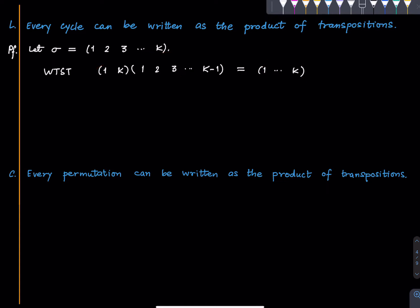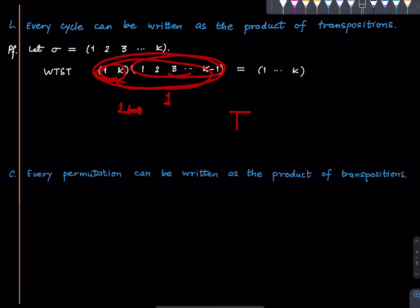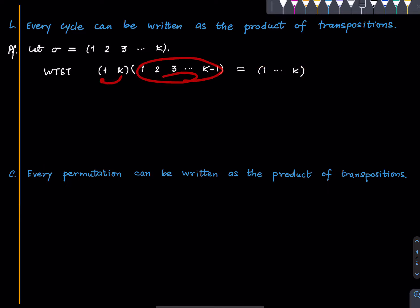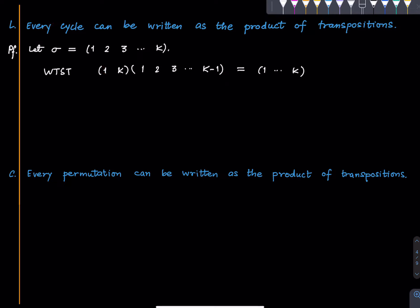We just need to see that the two permutations agree on every symbol. Start with 1: 1 maps to 2 under the left side, and also 1 maps to 2 on the right side. Similarly, 2 maps to 3, and so on. What about k-1? k-1 maps to 1, and 1 maps to k, so therefore k-1 maps to k under the left side — and on the right side also k-1 maps to k. Lastly, k maps to k under one part and k maps to 1 under another, so therefore k maps to 1 under the left side also. So these two permutations are equal.